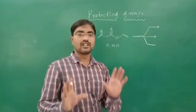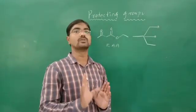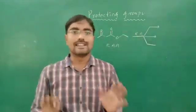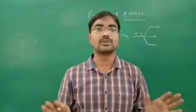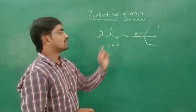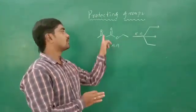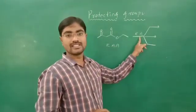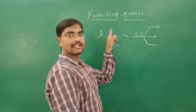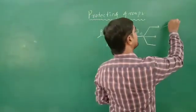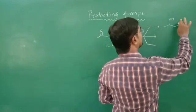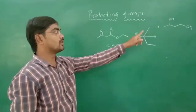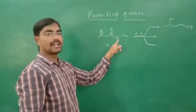Both are functional groups which can be reduced with reducing agents to give alcohol. Now, if you are applying reducing agents on this molecule, let us see what possible products you are getting. If you are using a strong reducing agent, then both the ketone and ester get reduced and you will get a diol — this is the diol which you are getting from the reduction of ketone and ester.